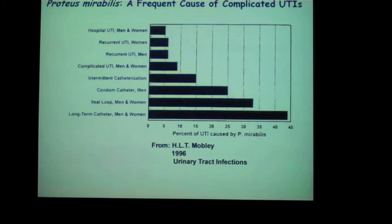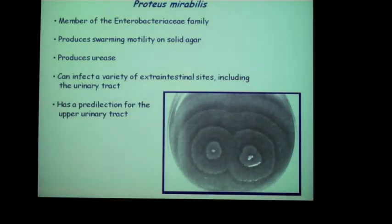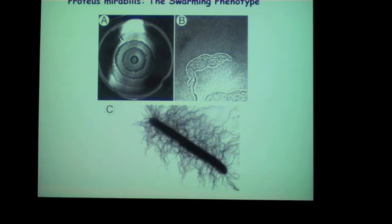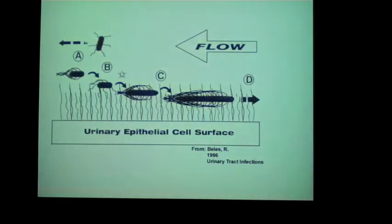Proteus mirabilis is very well adapted for complicated UTI. A survey shows that catheterization results in a higher percentage of UTIs caused by this pathogen. It is a very interesting organism in the laboratory — on an agar plate it produces swarming motility. Only two colonies of Proteus may be present, each at the center of a bullseye, but they produce swarmer cells: very elongated bacteria with up to 10,000 flagella per bacterium compared to the usual 20 to 50, making them excellent swimmers. This swarming phenotype is thought to be a virulence factor allowing the organism to move against the flow of urine and ascend to the kidneys.